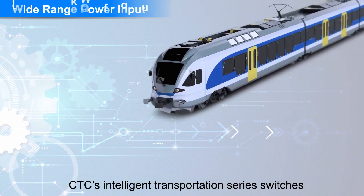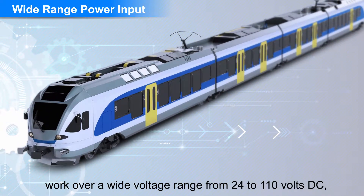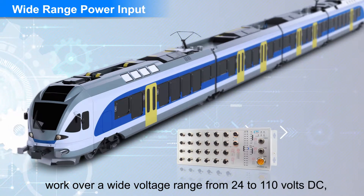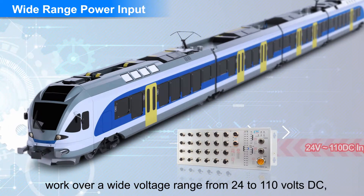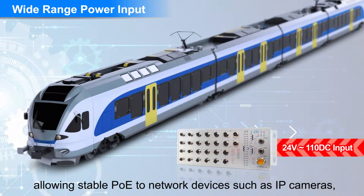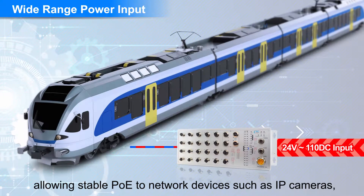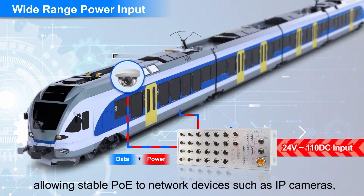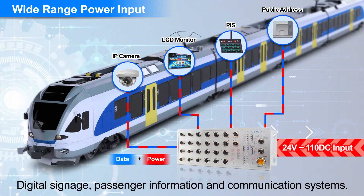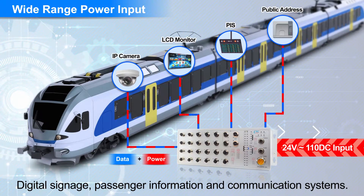CTC's Intelligent Transportation series switches work with a wide voltage range of 24 to 110 volts DC, allowing stable PoE to network devices such as IP cameras, digital signage, passenger information, and communication systems.